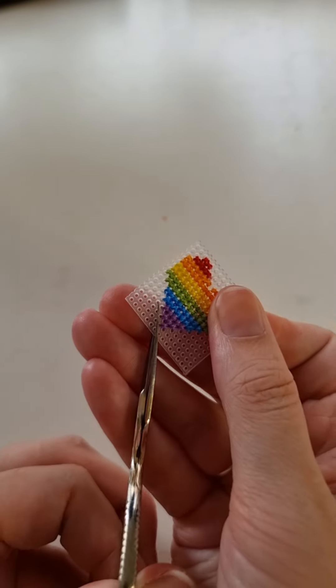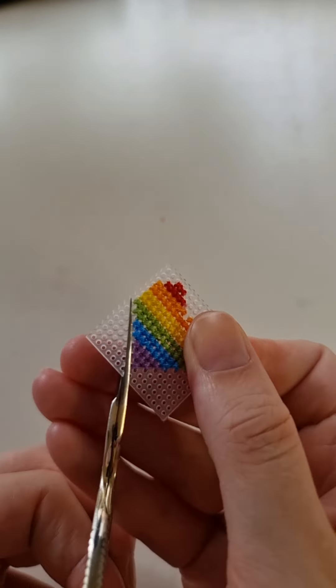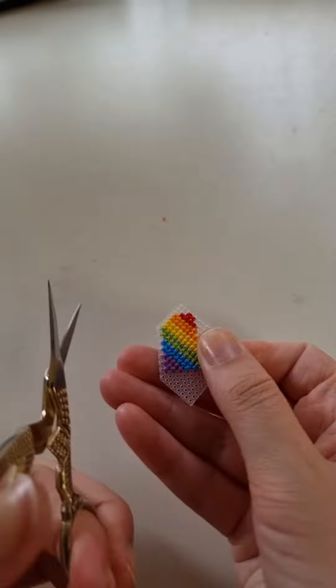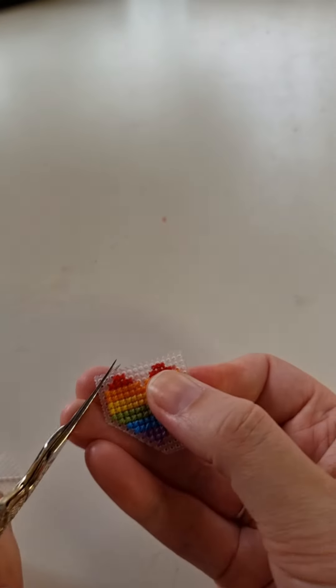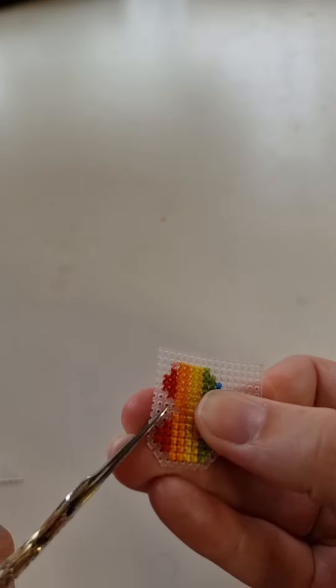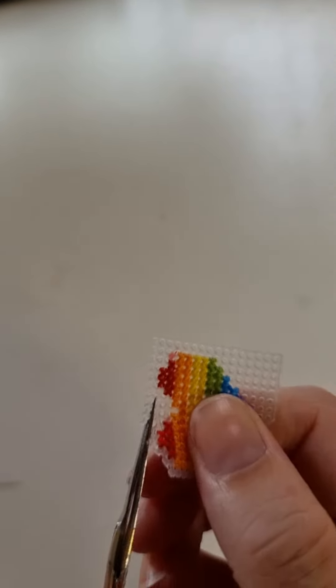Now you're ready to cut your badge out from the plastic canvas. Cut carefully around the edge leaving about one square of plastic on each side. Take care that you don't snip your threads. Make sure you're using sharp scissors as well as this will help.